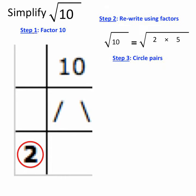My next step is to circle all the pairs. And when I look at 2 times 5, I see that there are actually no like pairs. So there's nothing to circle, nothing to do.